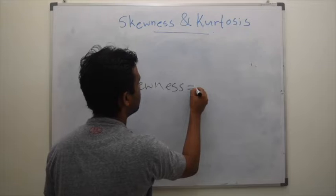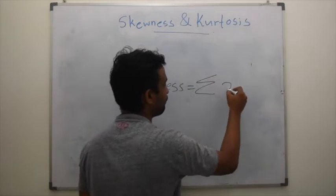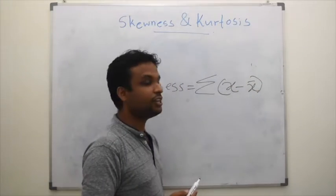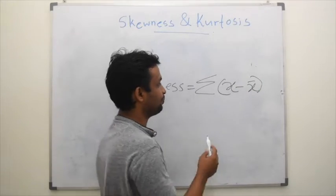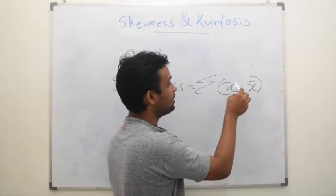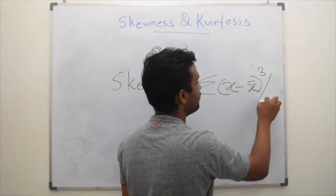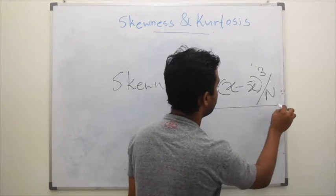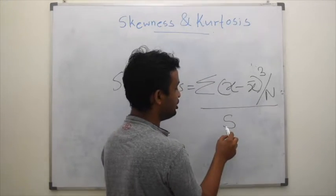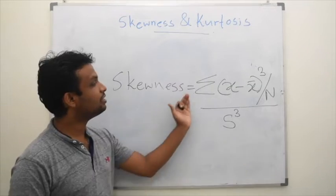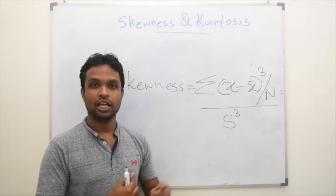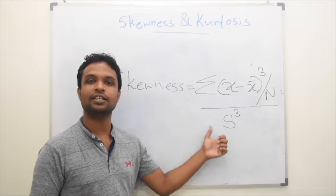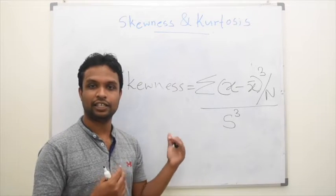Skewness equals summation of (x minus x-bar) to the power 3 divided by total sample n, and the total divided by standard deviation to the power 3. This is how we calculate skewness. If the answer is a positive value, we can simply think that it is positively skewed. If the answer is negative, we can simply call it as negatively skewed.